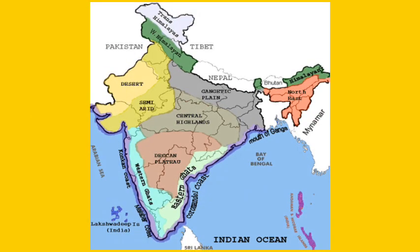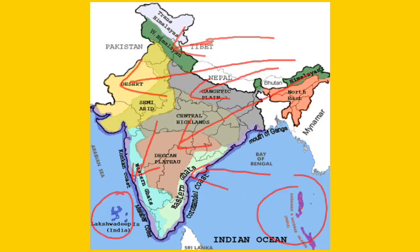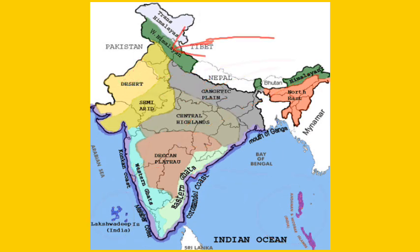In the previous video we discussed about Major Physiographic Divisions of India in short: the Himalayan Mountains, the Northern Plains, the Peninsular Plateau, the Indian Desert, the Coastal Plains and the Highlands. Now we will discuss all these Physiographic Divisions of India in detail.